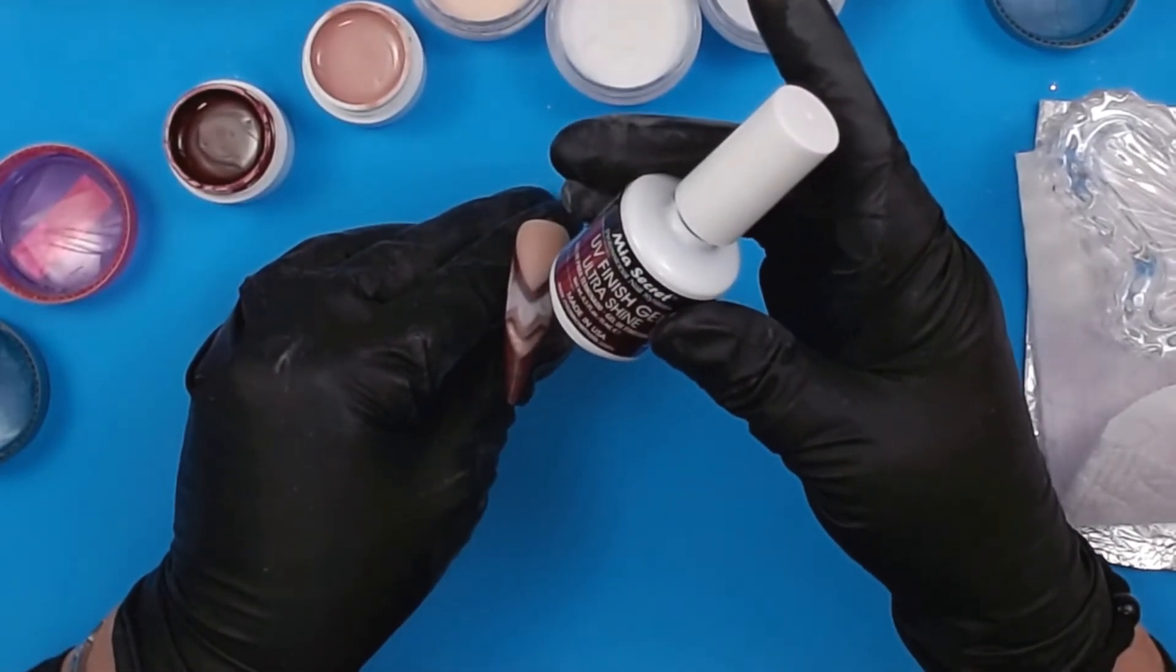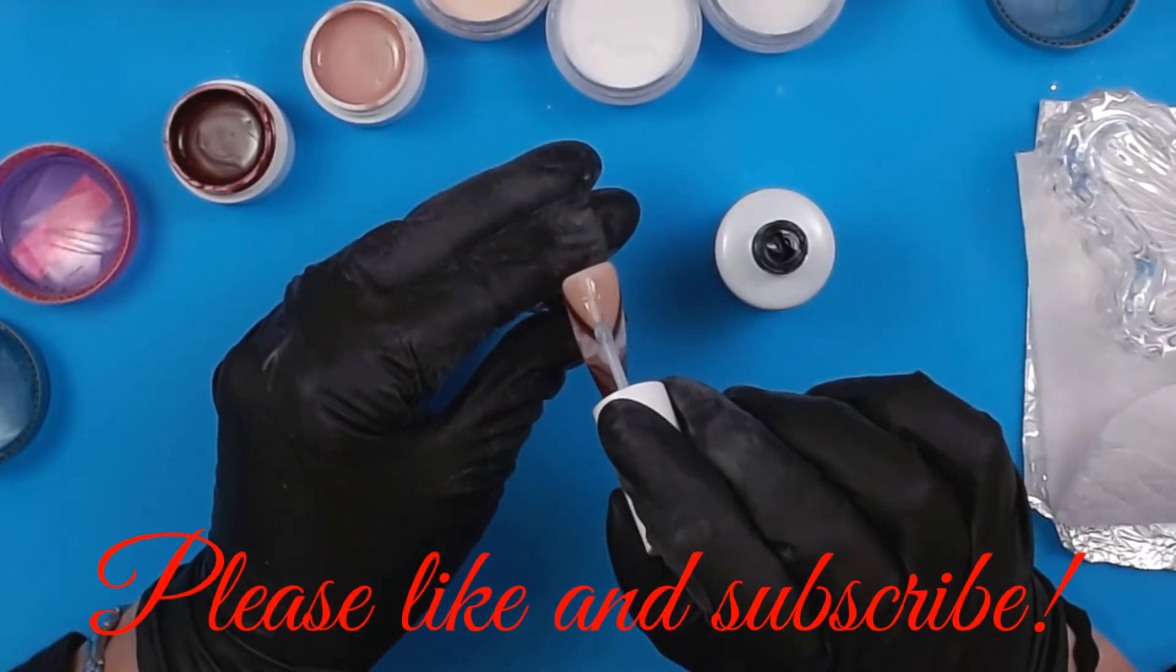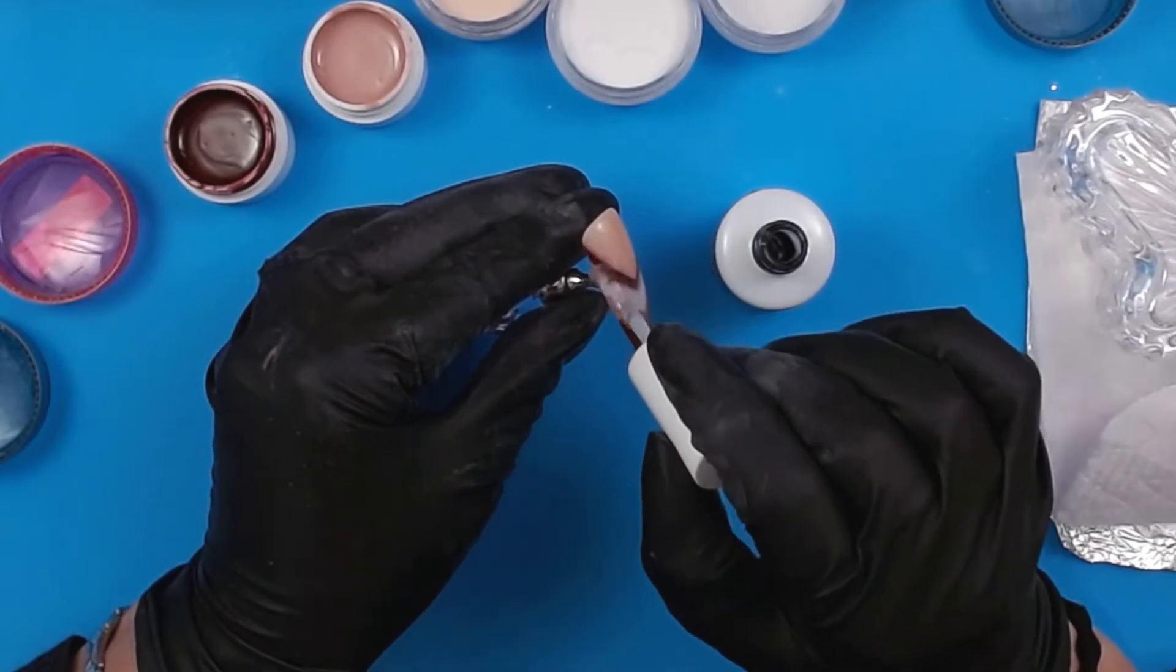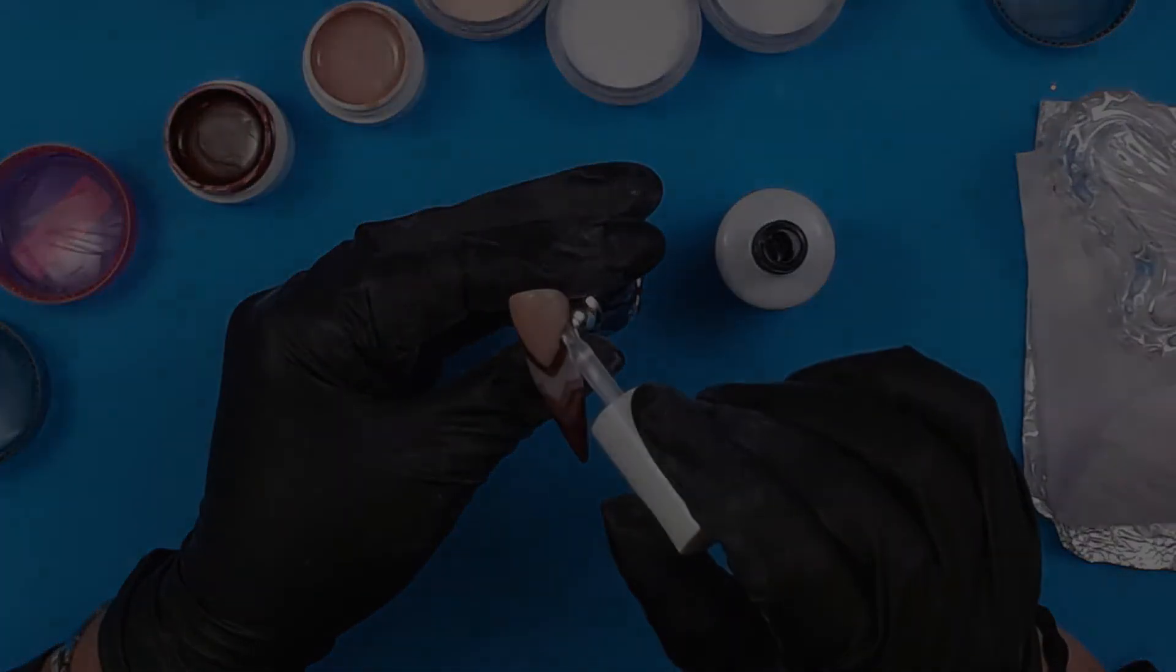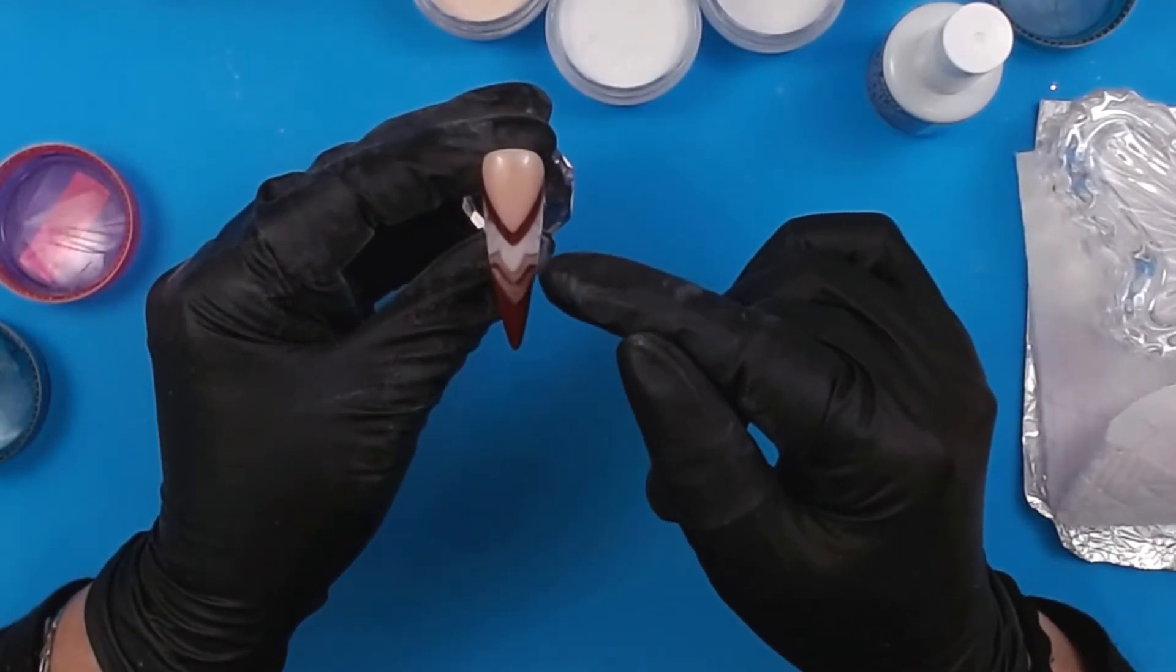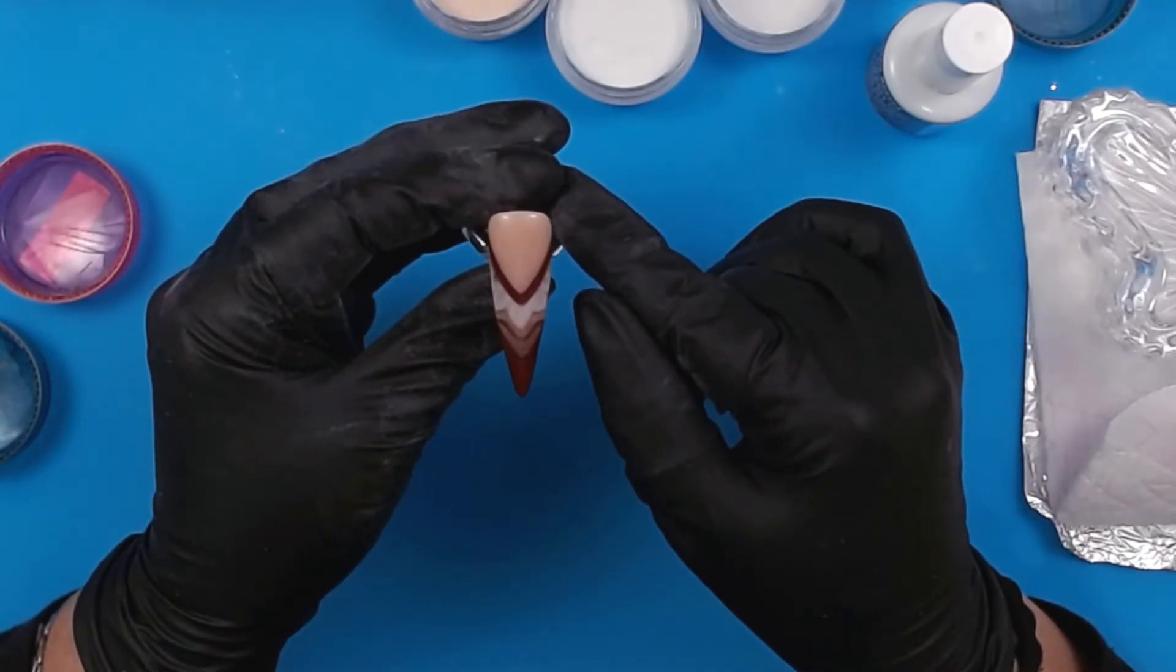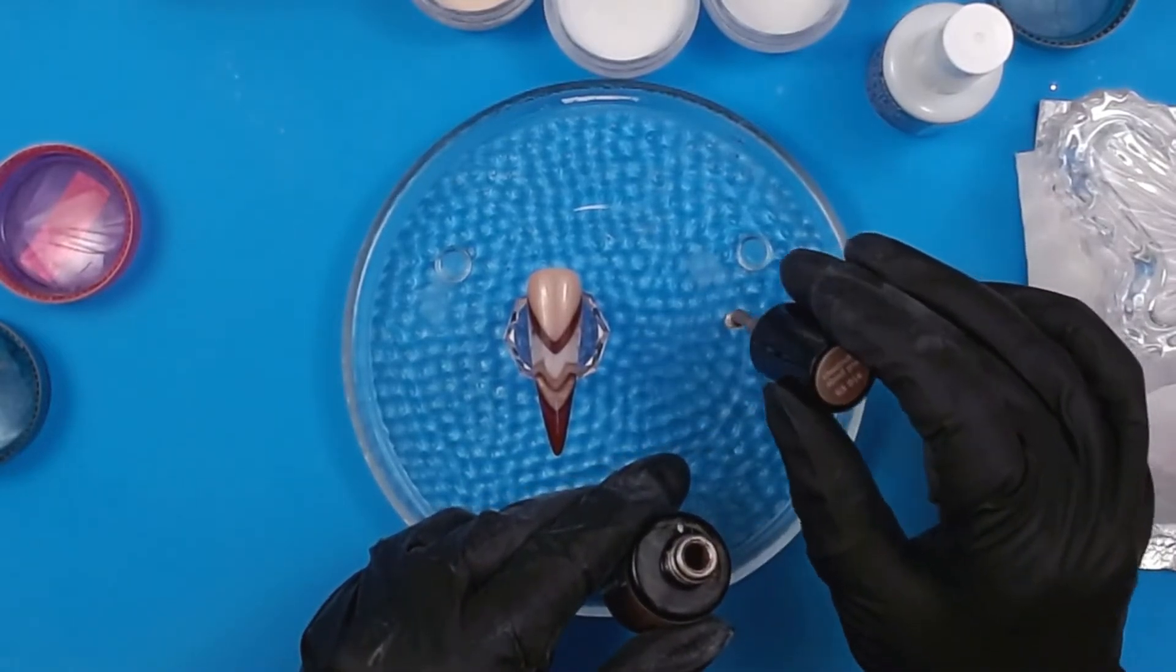I have filed and buffed and I'm going to be using this Mia Secret finishing gel. So far it's turned out really good. I've decided to use the gold again because I didn't really like how it turned out where I shaped the clear to the petals. It's just a little rough. I couldn't really get in there to file. So I'm going to use this beautiful gold to do some line artwork.